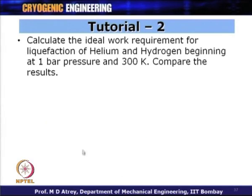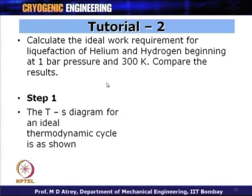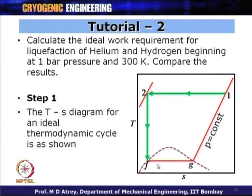For the second tutorial: calculate the ideal work requirement for liquefaction of helium and hydrogen beginning at 1 bar pressure and 300 K, and compare the results. The T-S diagram for the ideal thermodynamic cycle is the same. I look at the T-S chart for helium and hydrogen — at 1 bar and 300 Kelvin, hydrogen reaches 20 Kelvin and helium reaches 4.2 Kelvin.